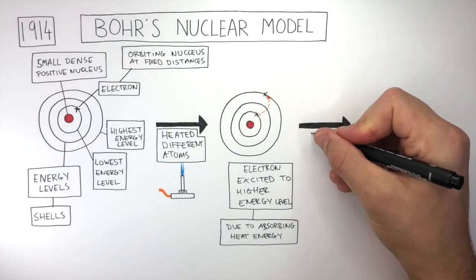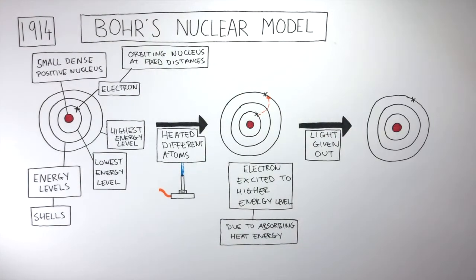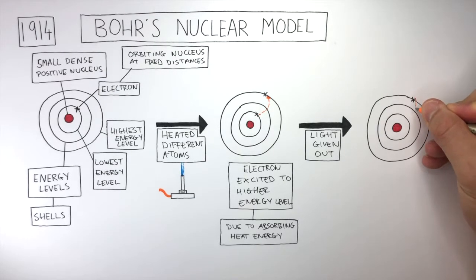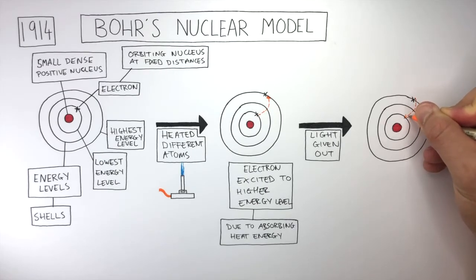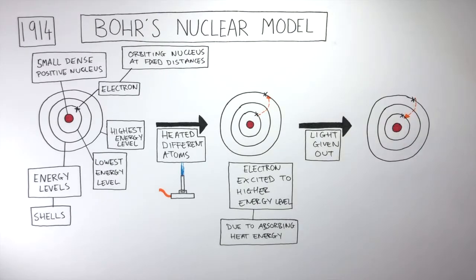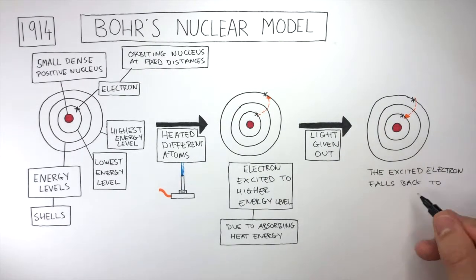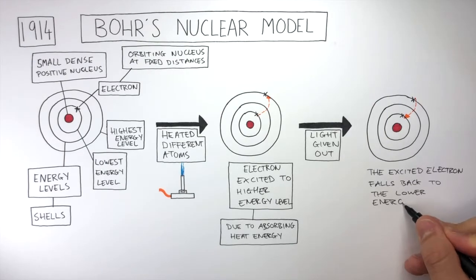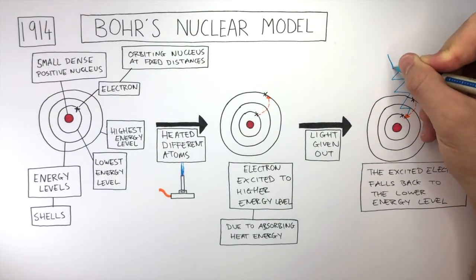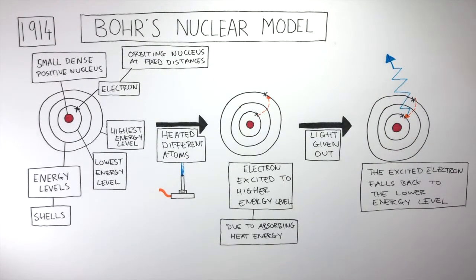This caused light energy to be given out. The electron at the higher energy level would have been unstable, so after a short and random time this electron would have fallen back from the higher energy level down to the lower energy level.